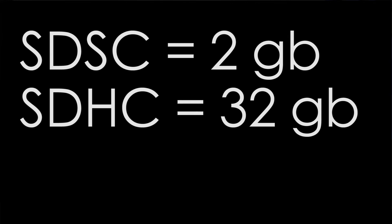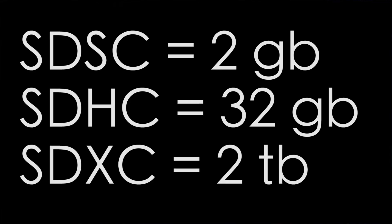In 2009, SD was upgraded again, this time to SDXC, where the XC stands for Extra Capacity. This one had a max capacity, theoretically, of 2 TB, and it also used exFAT as its file system, whereas in the past it was using FAT32.